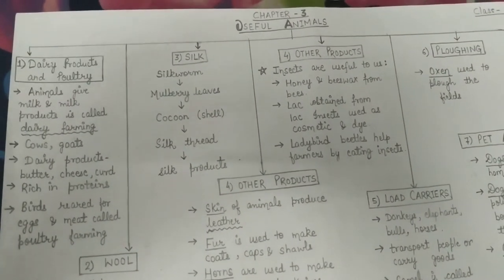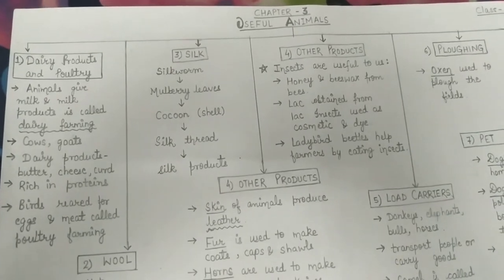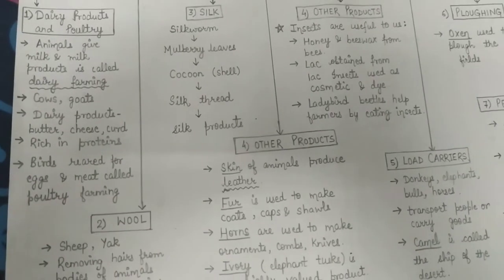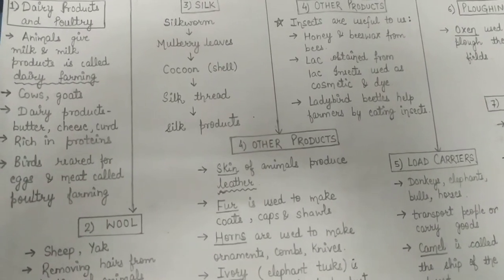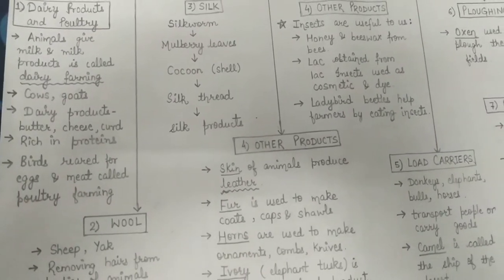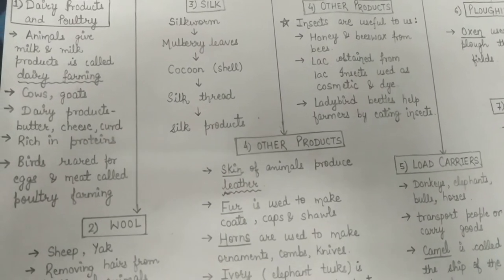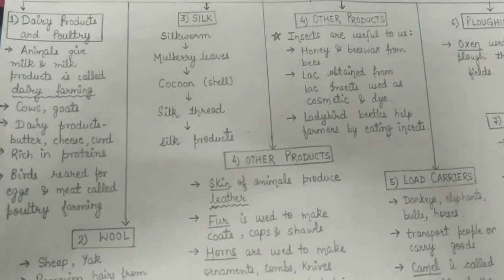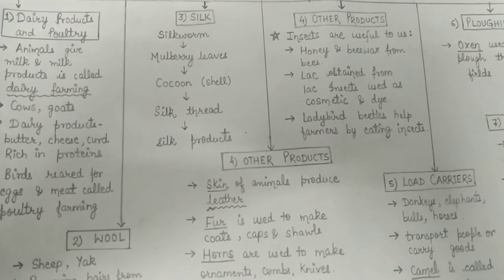The first point is dairy products and poultry products. Goats, cows and buffaloes are reared on farms for their milk. Rearing animals that give milk and milk products is called dairy farming.